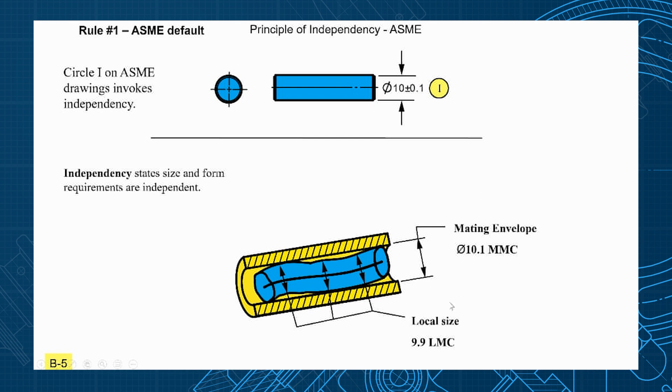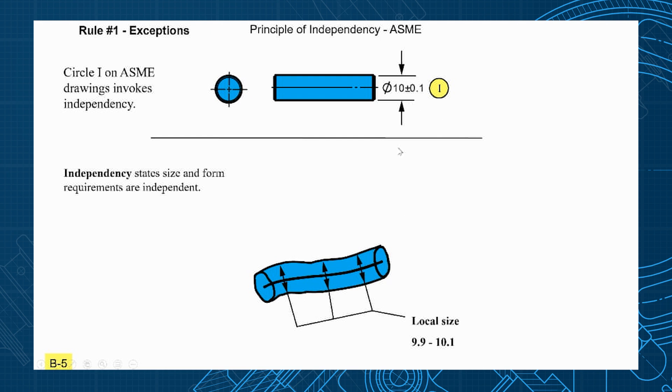So remember how we had a mating envelope and local size? This gets rid of the mating envelope. So now their size is going to be local size calipers 9.9 to 10.1 only.